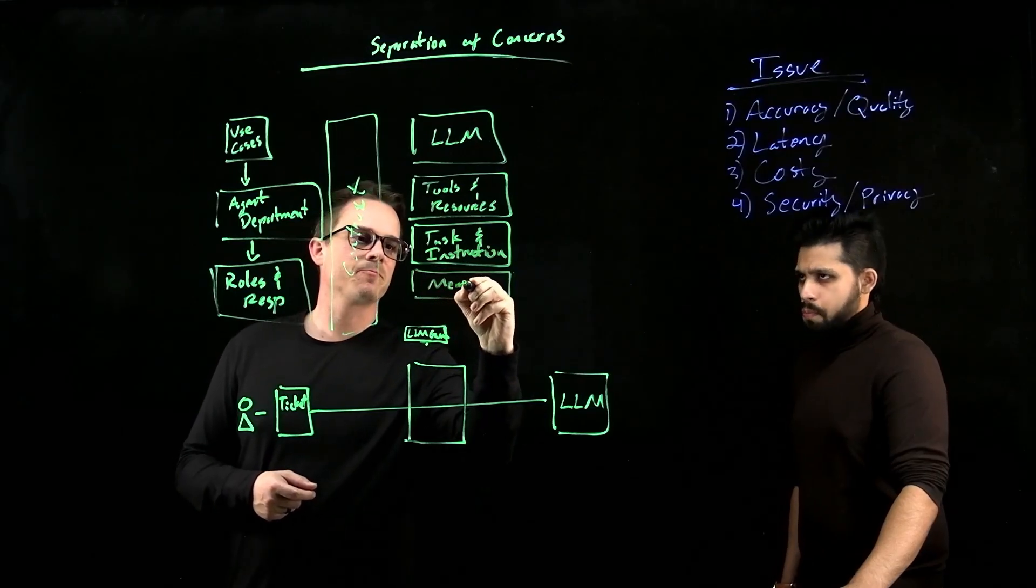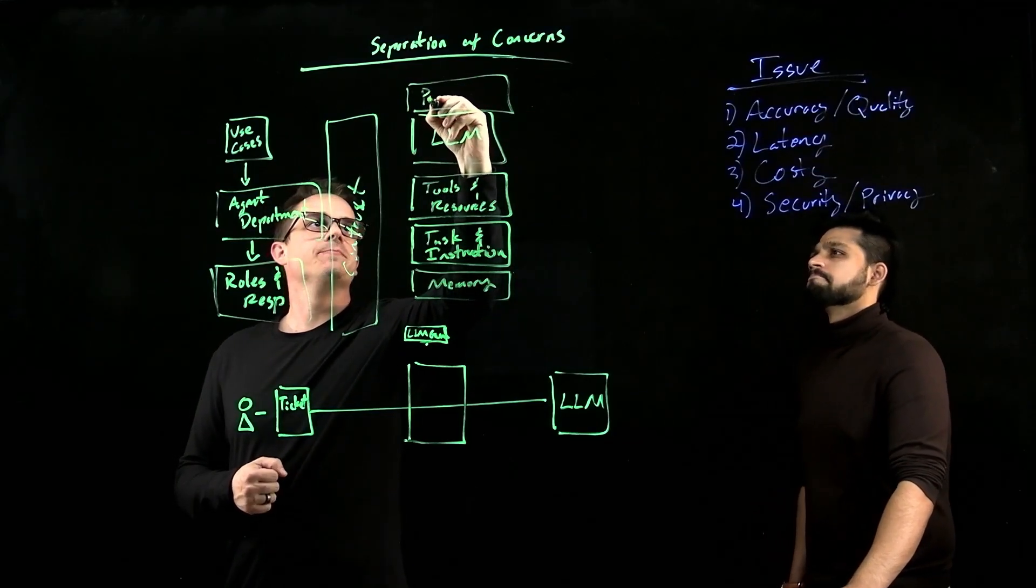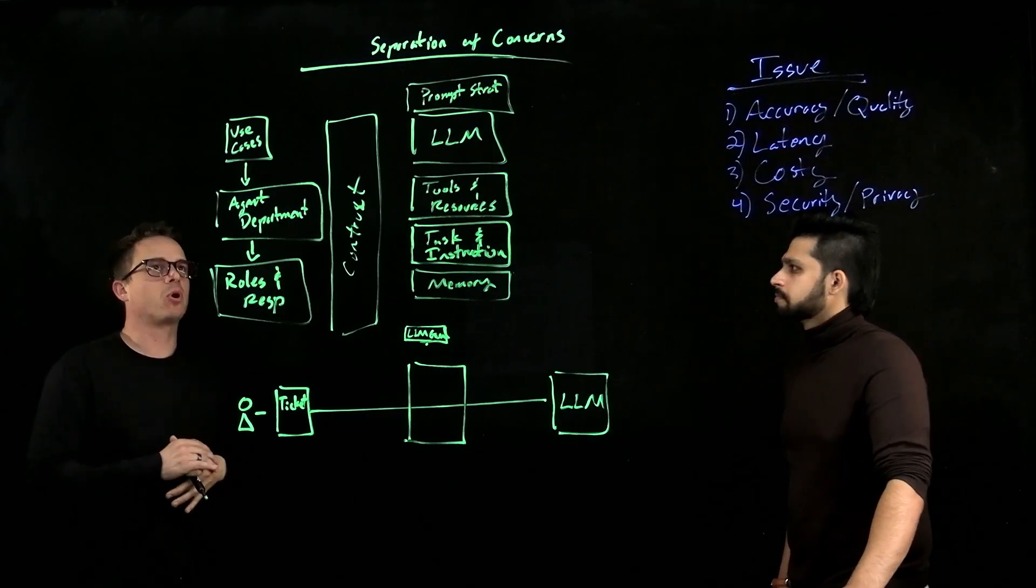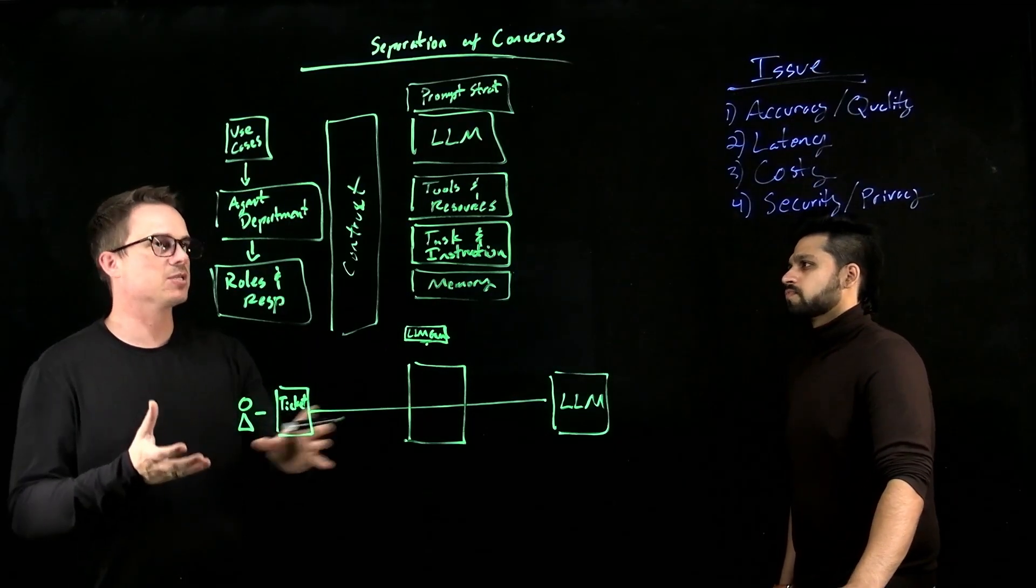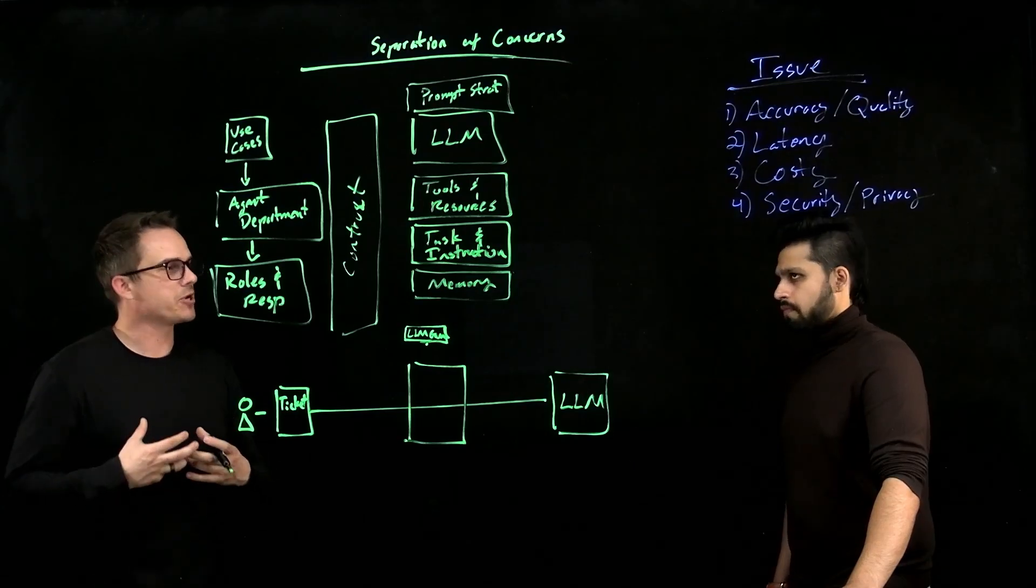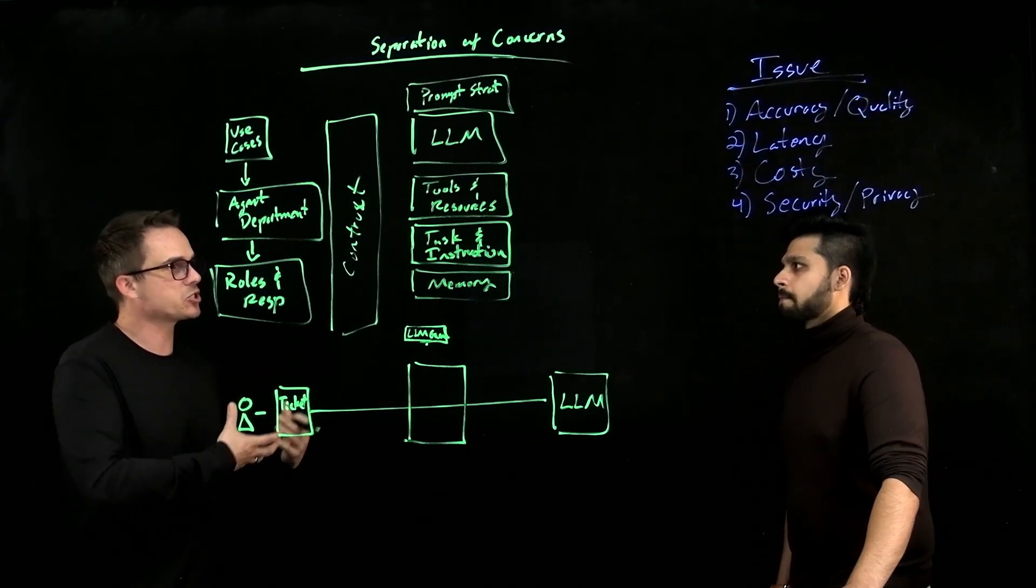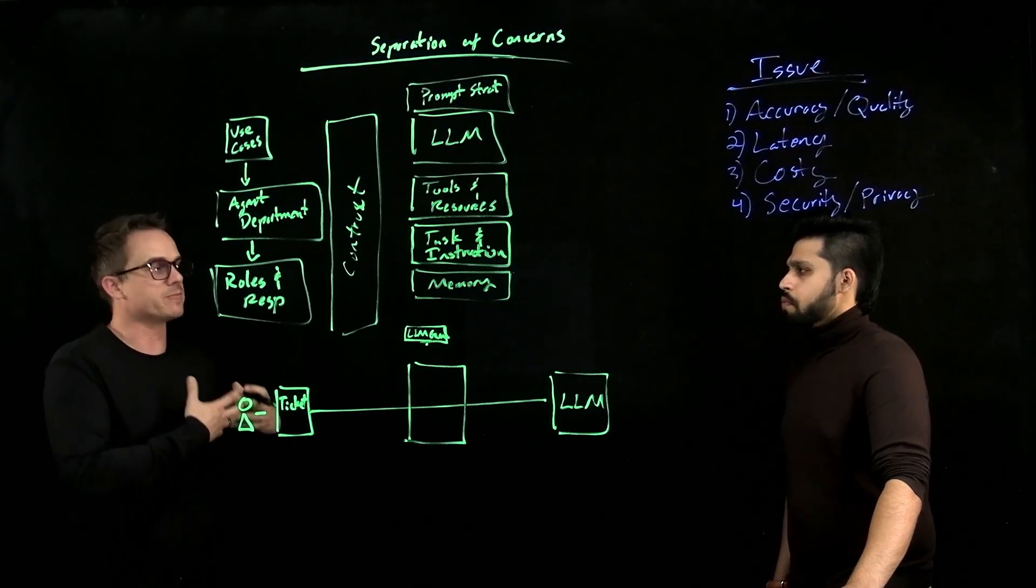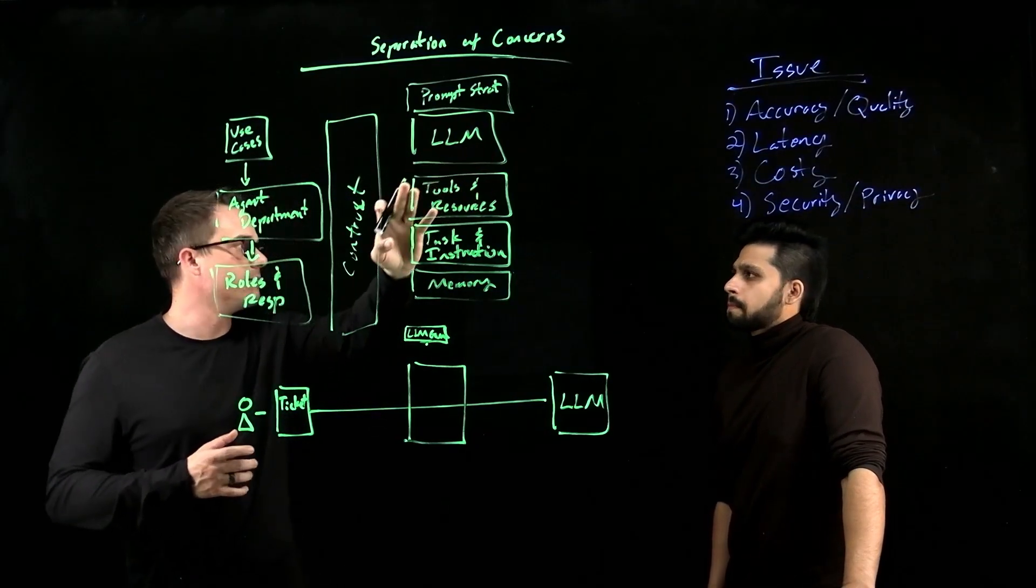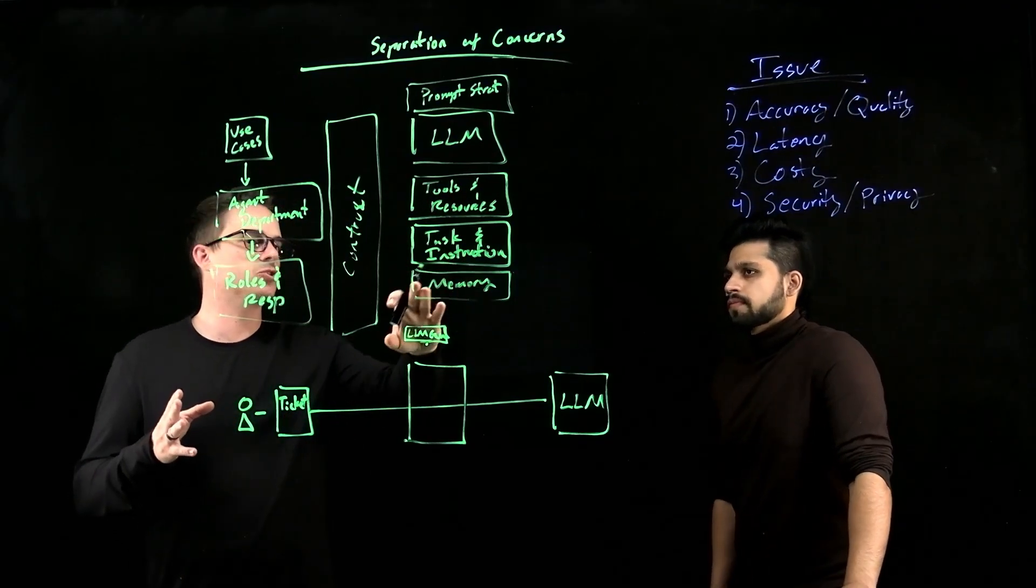And so what that agent construct looks like is effectively for each micro agent, we look at the LLM. We try to understand what LLM is proper and effective for the particular sub tasks that's going to be performed. We'll take a look at the tools and resources that it needs to access. So in this case, you have the ticketing system, but you might also have some kind of policy database. You might have some CI tools depending upon the nature of the integration. But we try to look at what tools and resources. We then go into the tasks and instructions that this micro agent is going to get. We'll go into memory. And then last but not least, we'll do prompt strategy.